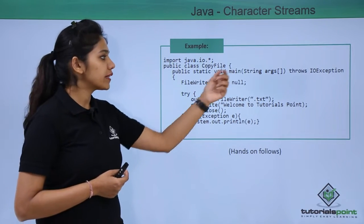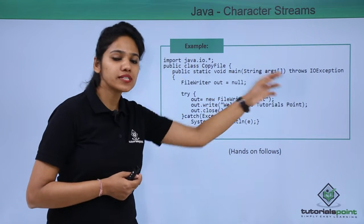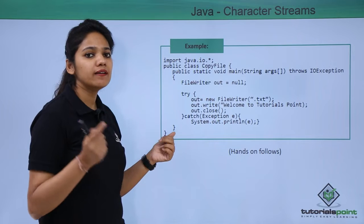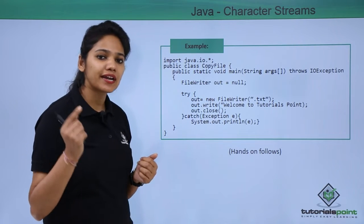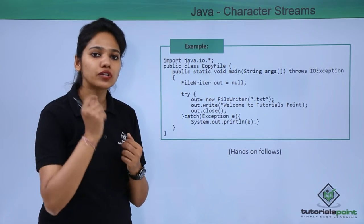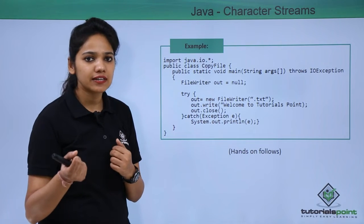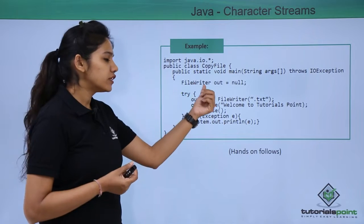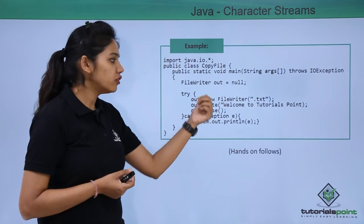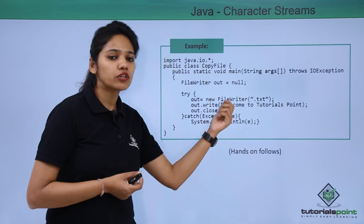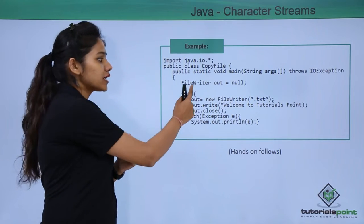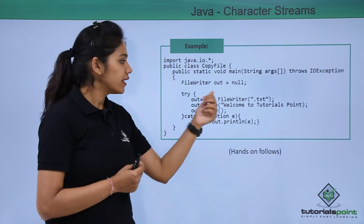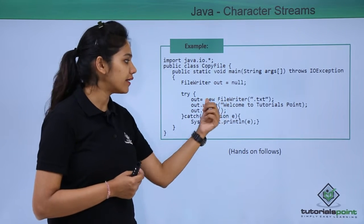In this class, we are trying to write certain data. In the main method, we have written that it throws IOException. Then we use the FileWriter class to write data to our destination file. This data may be of character type. Initially, you provide the value as null and then initialize it with your file name, writing: FileWriter out = null, then out = new FileWriter.